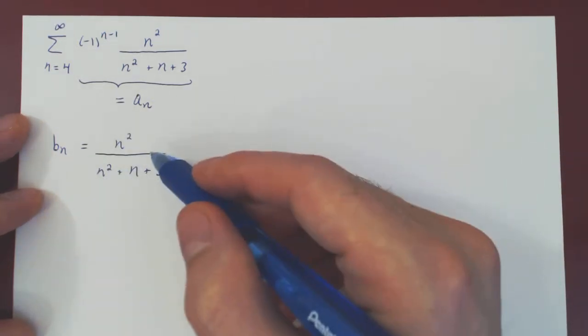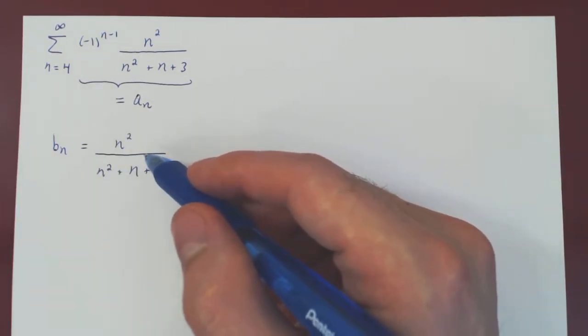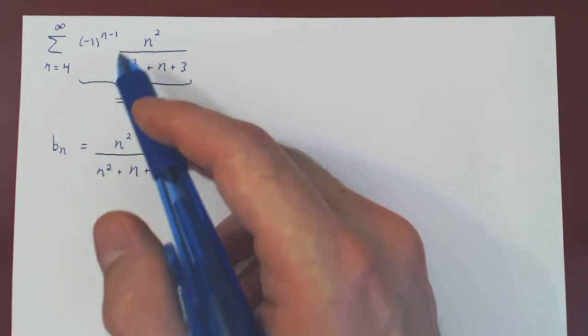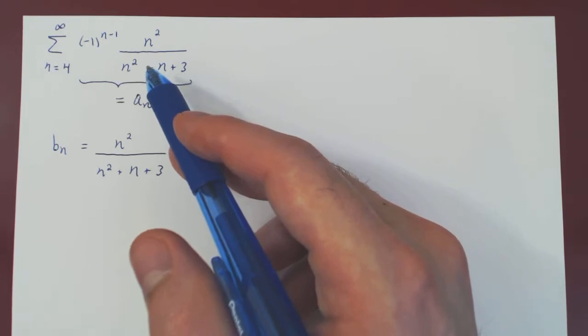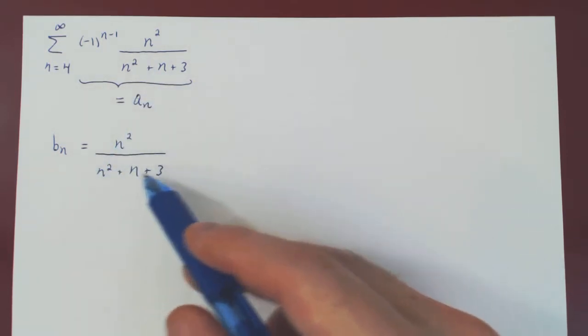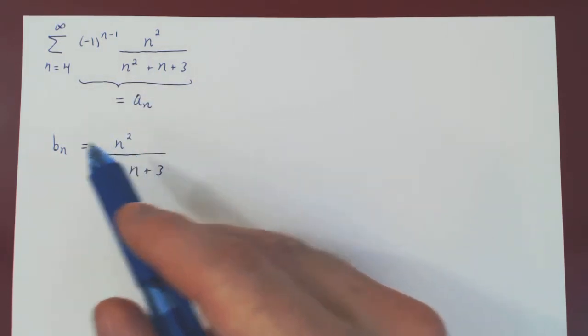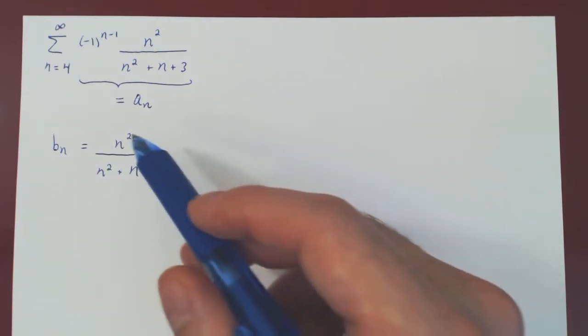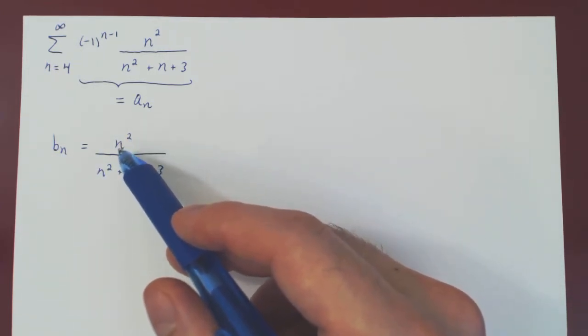But if you look at bn and you use your intuition, you'll see there's something funny going on here. We have to show, if we are to have convergence by the alternating series test, that bn is eventually decreasing, and that bn, as n tends to infinity, shrinks to zero. But use your intuition here and look at the second condition.